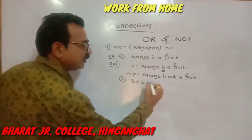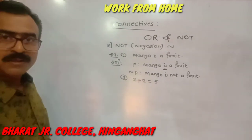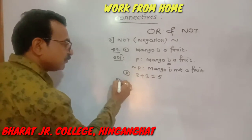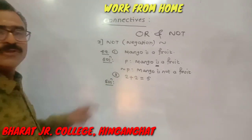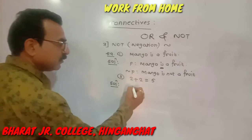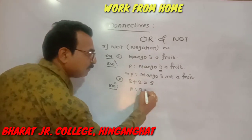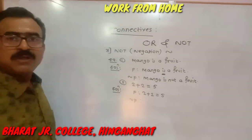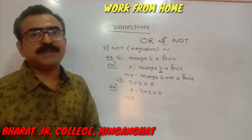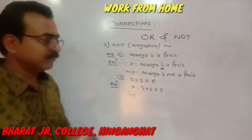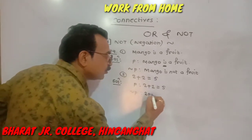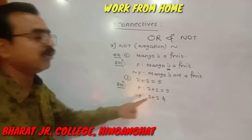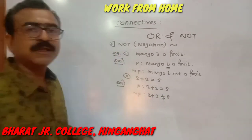Second example: '2 + 2 = 5.' Write down its negation. Represent the statement by p. In case of a symbolic statement, you have to use the opposite symbol. So in place of 'is equal to' (=), you write 'is not equal to' (≠). Therefore, the negation is: '2 + 2 ≠ 5.'